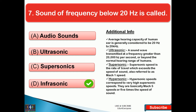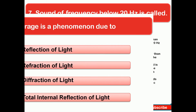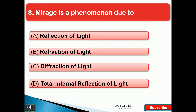Supersonic speed is the rate of travel which exceeds the speed of sound, also referred to as Mach 1. Hypersonic speeds correspond to very high supersonic speeds — basically Mach 5, or 5 times the speed of sound. Next question: mirage is a phenomenon due to — the right answer is option D, that is total internal reflection of light.